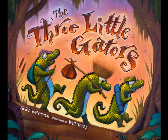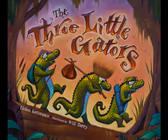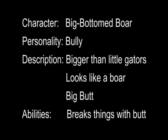One of the first things I do when I want to make a character for a book is I write down different traits. I read through the text and write down a list. So we've got personality — this big bottom boar is a bully. In his description there isn't much: we know he's bigger than the little gators, he looks like a boar, he's got a big butt, and he breaks things with his butt. So we're gonna start there.